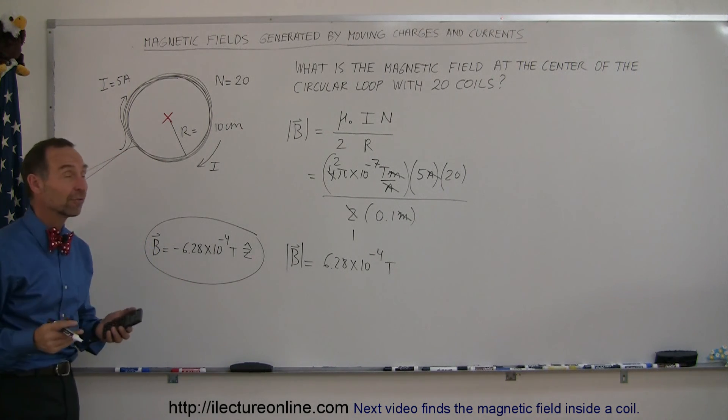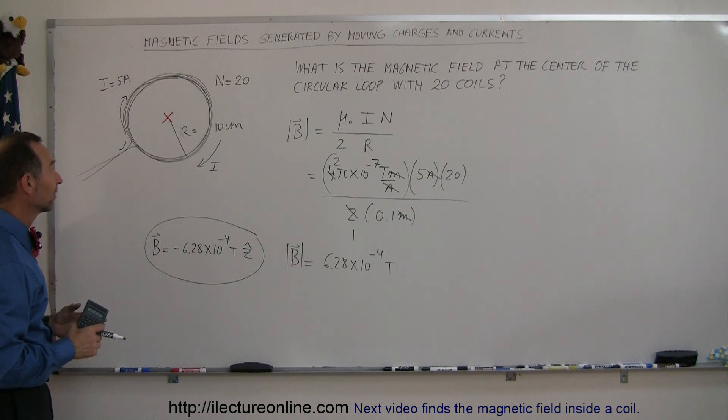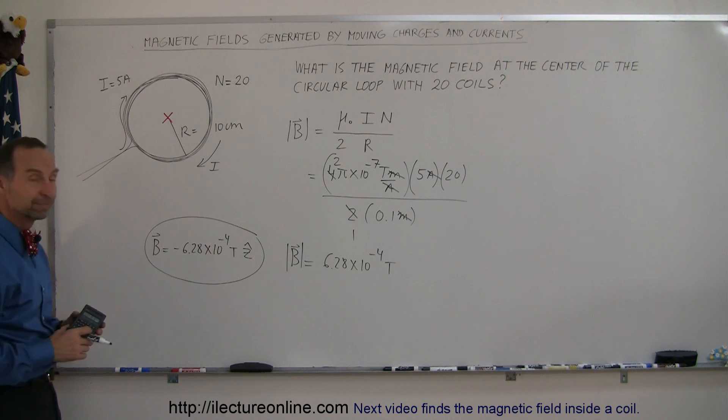And that's how you find the magnetic field at the center of a set of current loops.